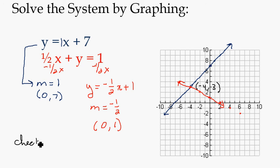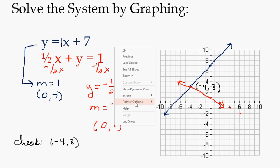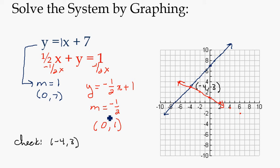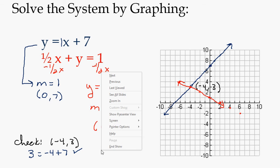So we could put in x is negative 4 and y is positive 3 and make sure it works. So if we put it in the blue equation, we get y is 3. x is negative 4, plus 3. Yep. That's true. Let's check the red equation.